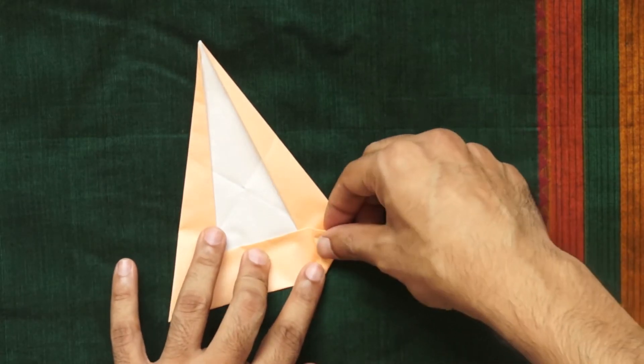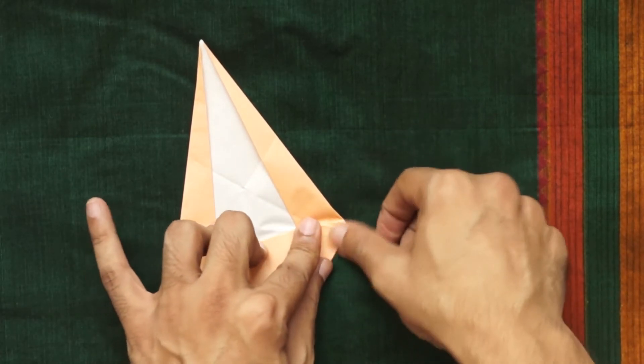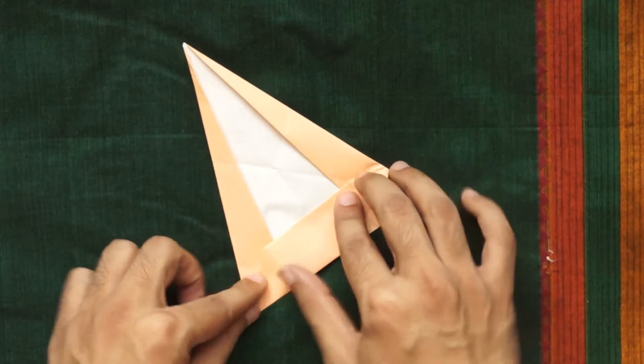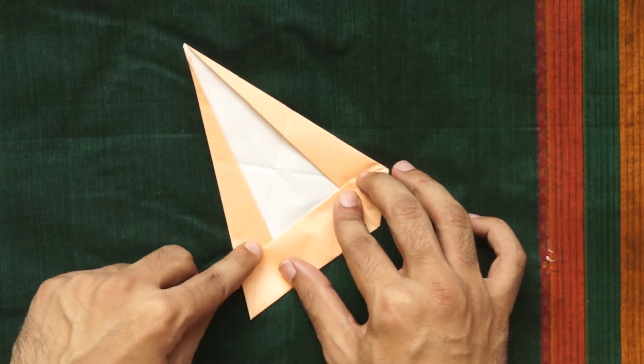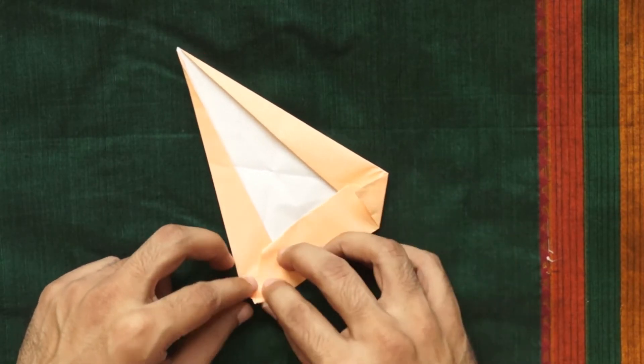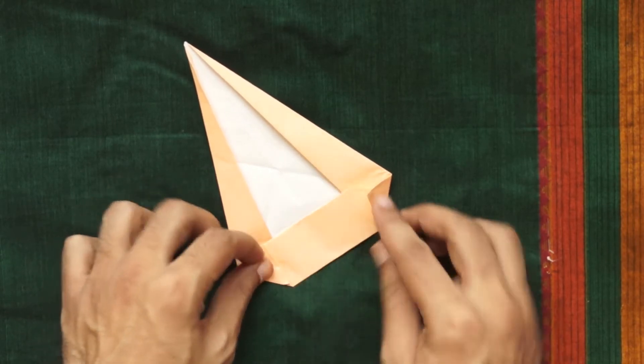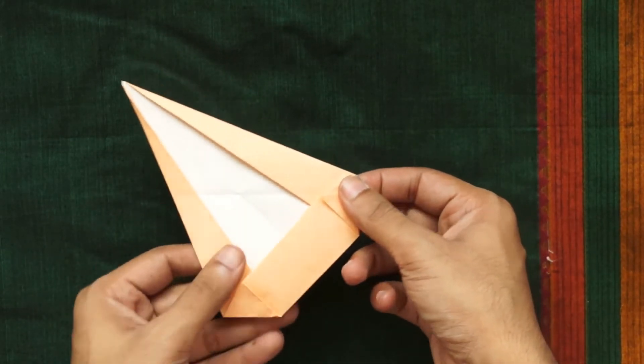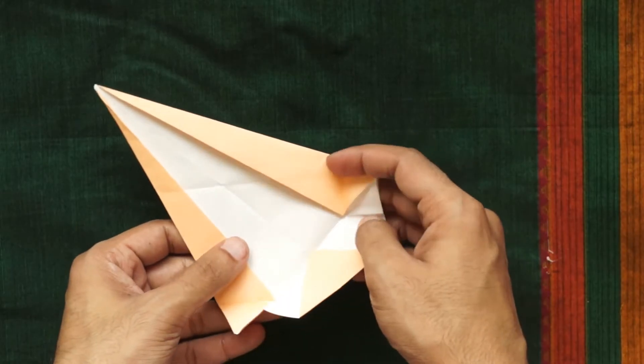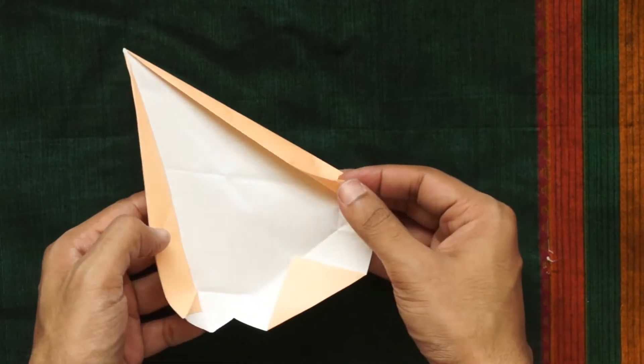Fold the points of the bottom two corners up to the upper corners of the trapezoid shape at the base of your triangle. Unfold the two corners and also unfold the trapezoid shape back downwards.